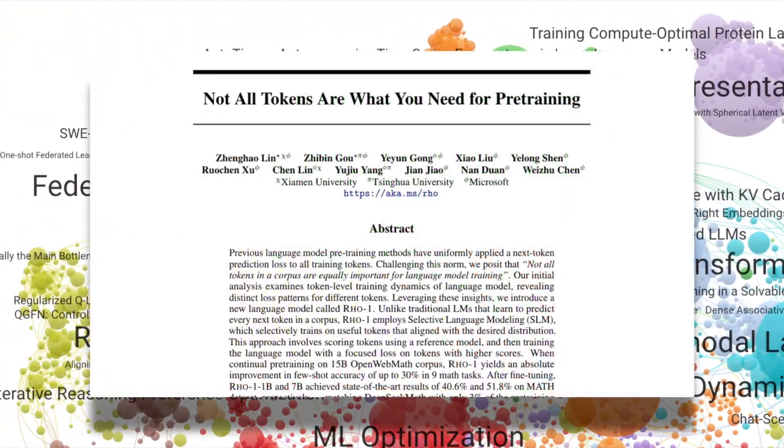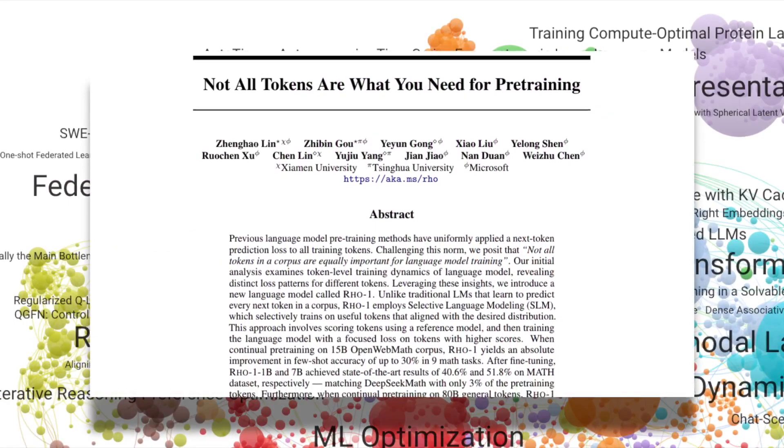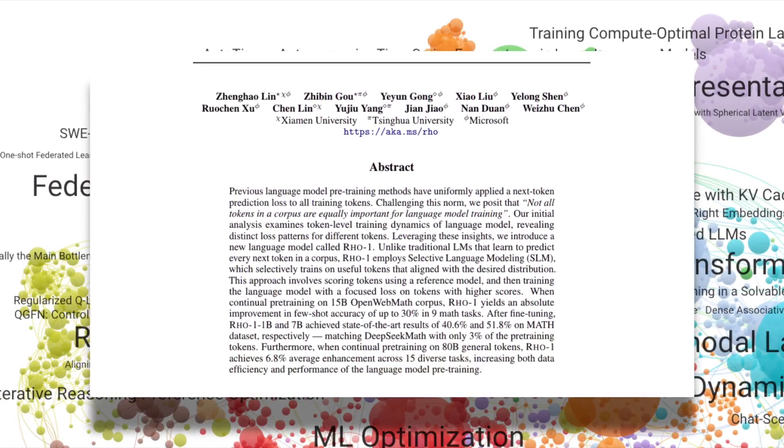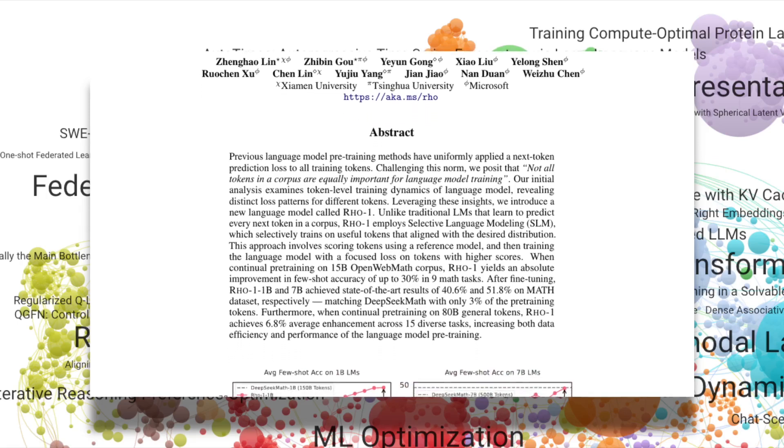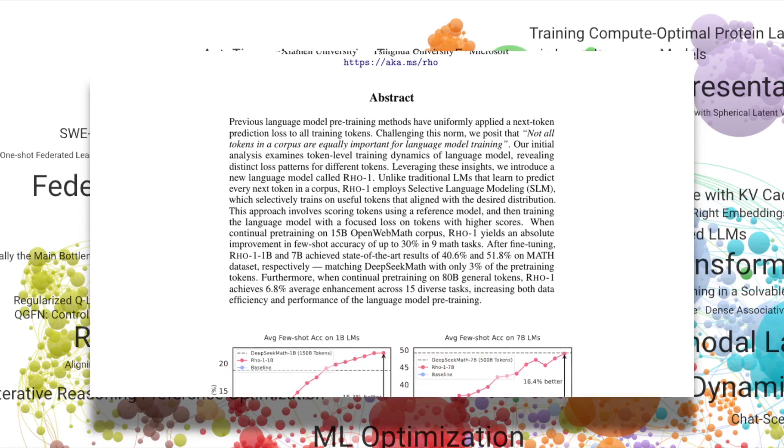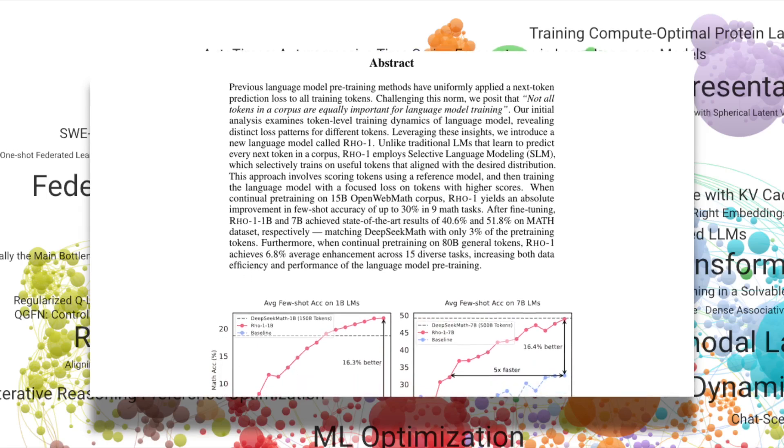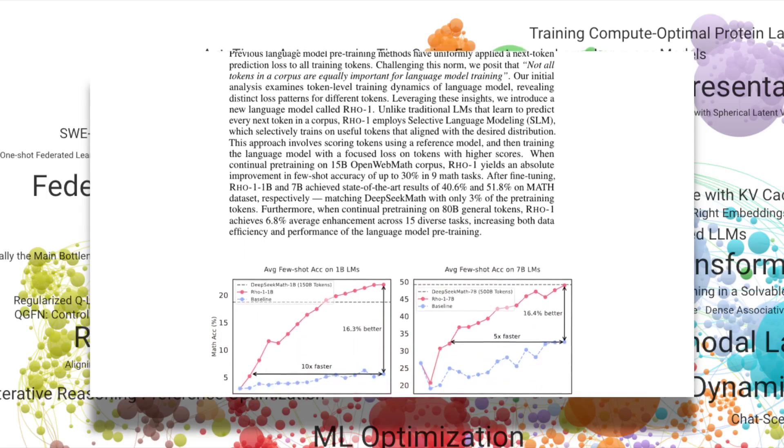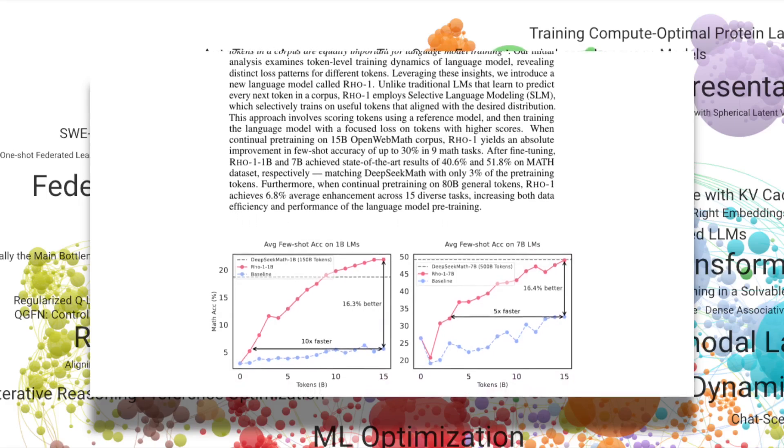On the LLM front, Row 1 snagged a Best Paper award for its Selective Language Modeling approach. By training on the most informative tokens, rather than all tokens, it achieves state-of-the-art performance on benchmarks like math, with significantly fewer pre-training tokens.